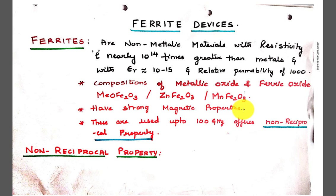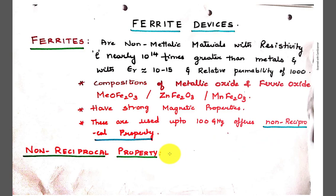Because of these strong magnetic properties, ferrites offer two important properties: one is the non-reciprocal property, and another one is Faraday's rotation.